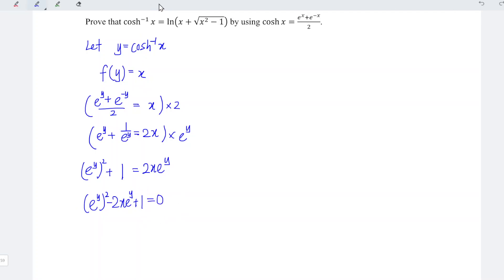Up to this stage, we can apply the quadratic formula. Recall that we have x is equal to minus b plus minus square root of b square minus 4ac divided by 2a. For this case, the unknown here is e to the power of y.